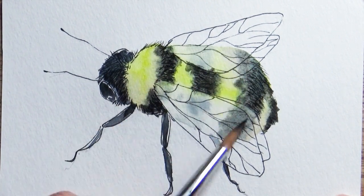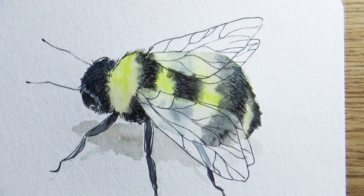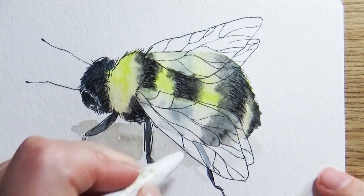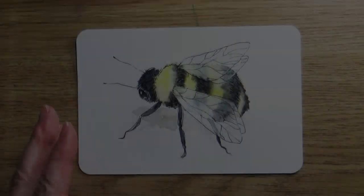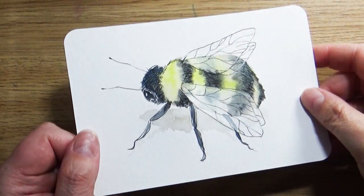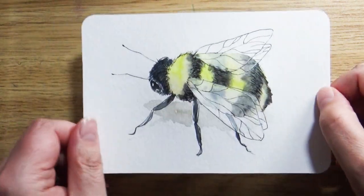The last thing I'm going to do for my bumblebee is add a little bit of a cast shadow. That's going to give it a nice 3D appearance like he's actually sitting on top of my page. For more information about other classes we're offering at the Coos Art Museum, visit our website at www.coosart.org. Until next time, stay creative!